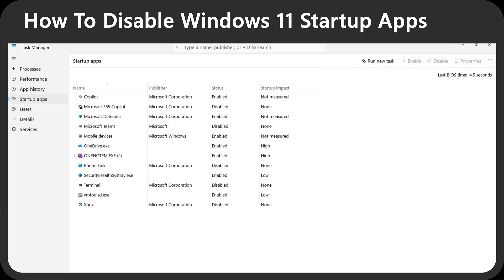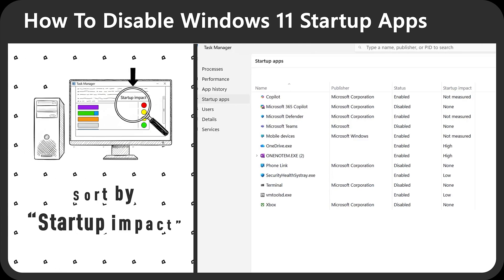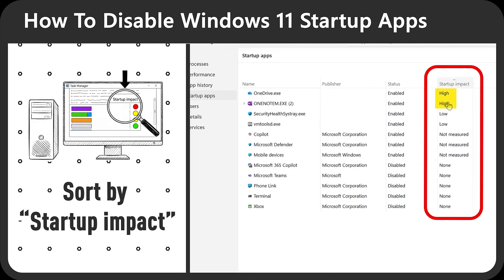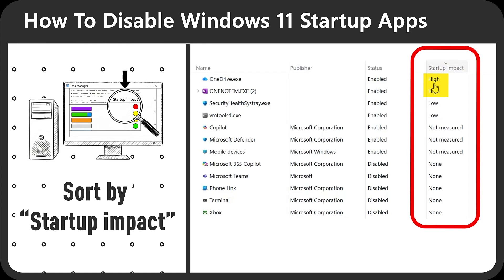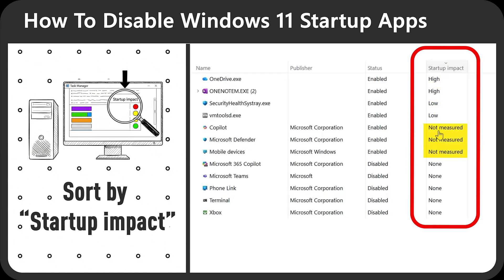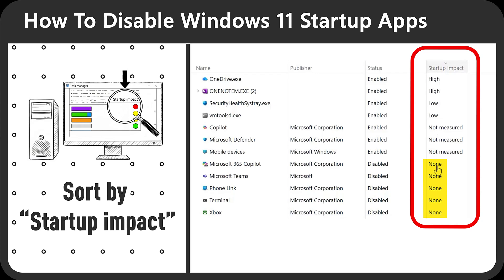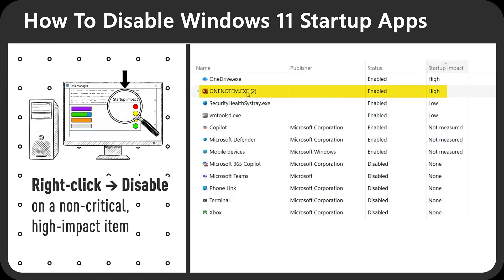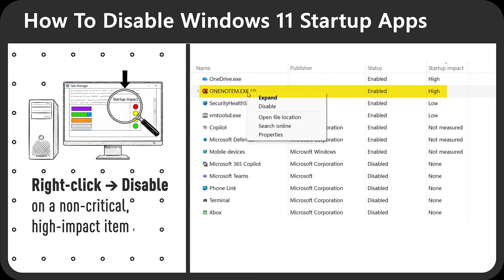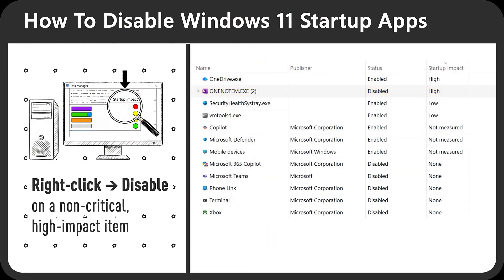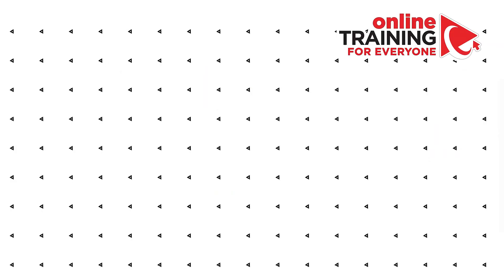The million-dollar question is: how do you decide what to disable? Let me show you a quick trick first, then I'll explain how to do the analysis in detail. The easiest thing is to sort by Startup Impact. You'll see that two tools have high impact, two have low impact, some are not measured, and some have no impact. For example, if you're not using OneNote, you can select it, right-click, and click Disable.